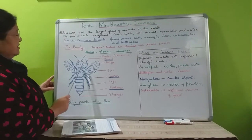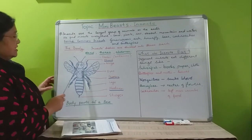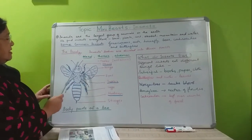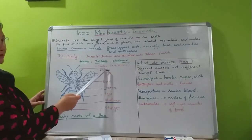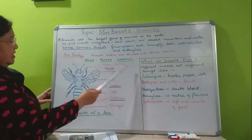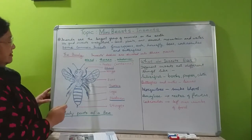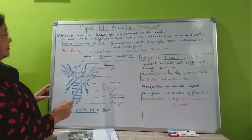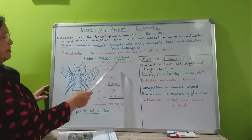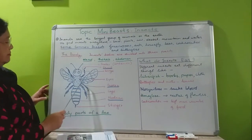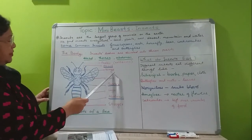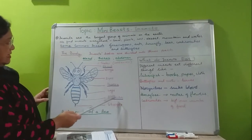Now, from the head, insects have big eyes — these are the eyes — and these are the feelers, also known as antennae. So in the head part, the eyes and feelers are connected.